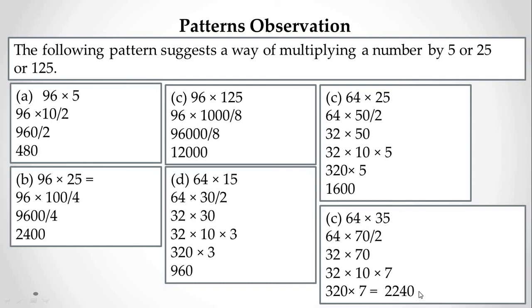So 2240 is the answer: 7×0=0, 7×2=14 (carry 1), 7×3=21+1=22, giving 2240. In this way, using the pattern observation technique your calculation will be easy. Remember: make the last digit zero or last two digits zero so you can easily calculate. Thanks for watching this tutorial — thank you.